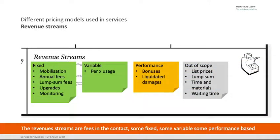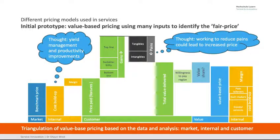Whether they're acceptable is questionable at times. I've put some different revenue streams here — have a look at them. Think about them. What do I mean by out of scope? What do I mean by performances? What do I mean by variable pay-per-X usage? And how about fixed? How do I get the customer to always buy with me and have the lowest threshold? Once I've got them, they've become effectively trapped.